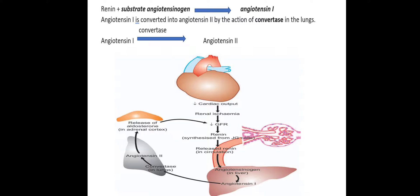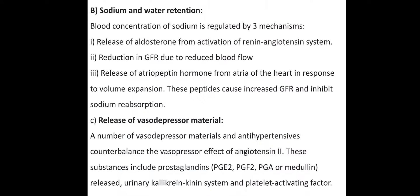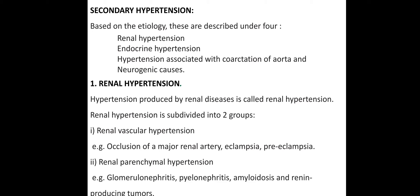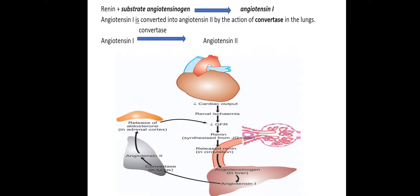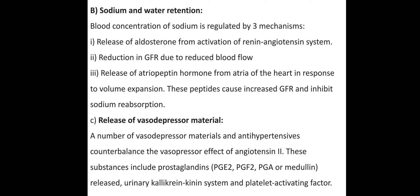Aldosterone produces sodium and water retention, which increases blood volume and contributes to renal hypertension. Blood concentration of sodium is regulated by three mechanisms. First, aldosterone stimulates sodium reabsorption. Second, reduction in GFR — if we reduce cardiac output, we reduce GFR.